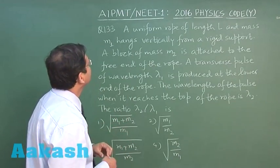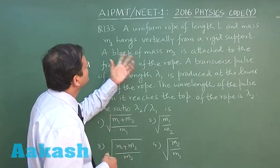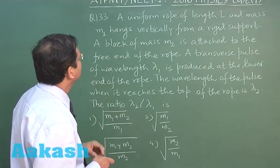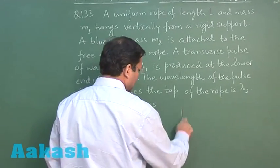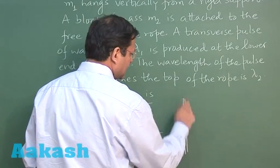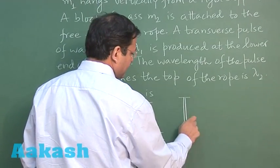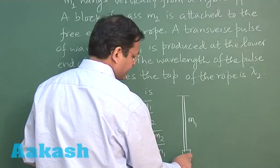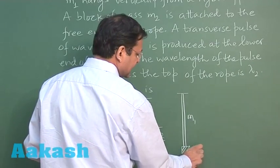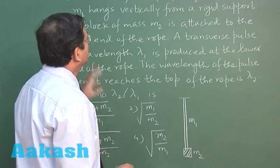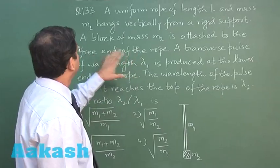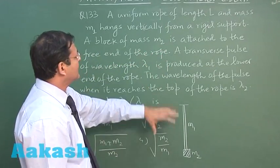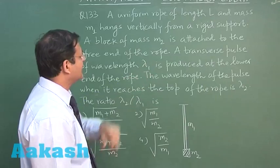In question 133, you have a uniform rope of length l and mass m1. A block of mass m2 is attached to the free end of the rope. A transverse pulse of wavelength lambda is introduced.